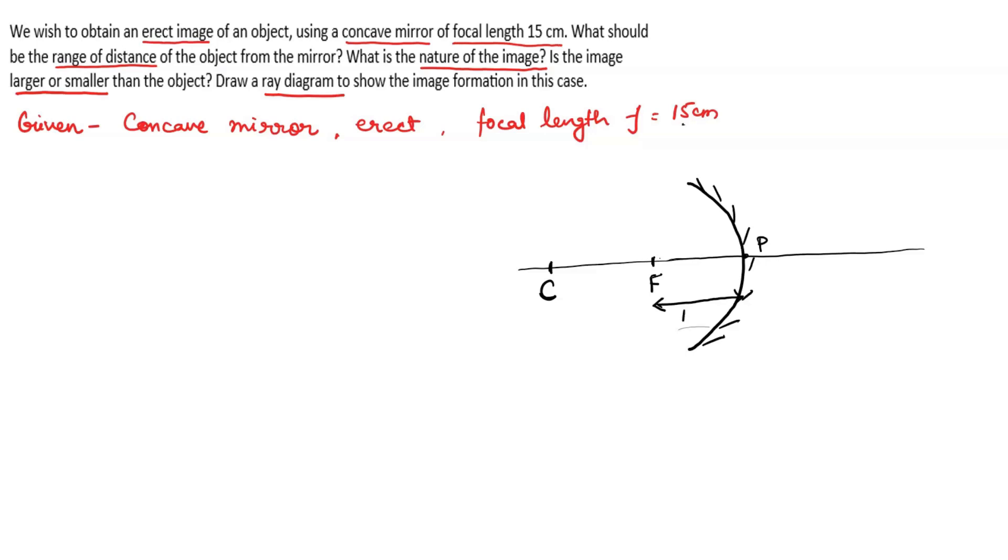For a concave mirror, an erect image is formed for only one case. What is the case? When an object is placed between focus and pole. So let's put an object somewhere between F and P. This is an object.